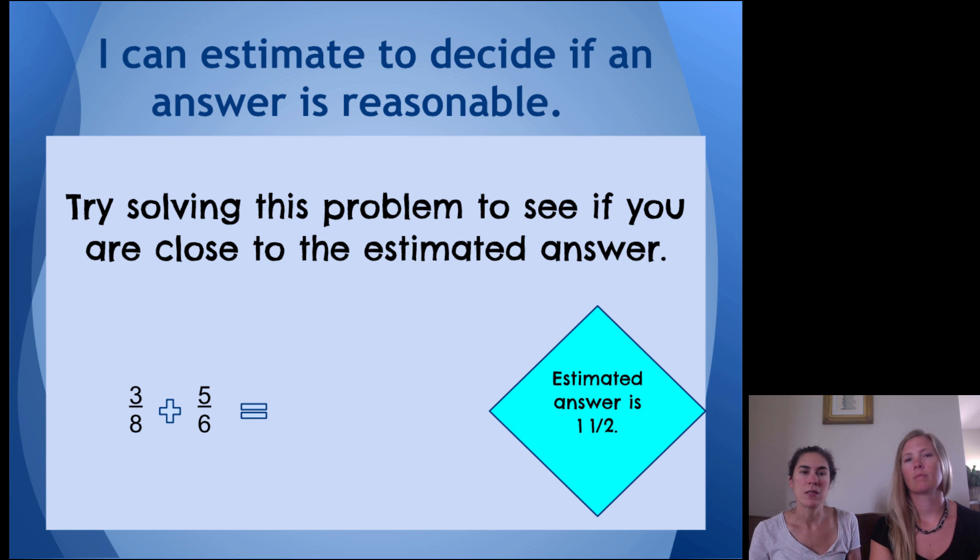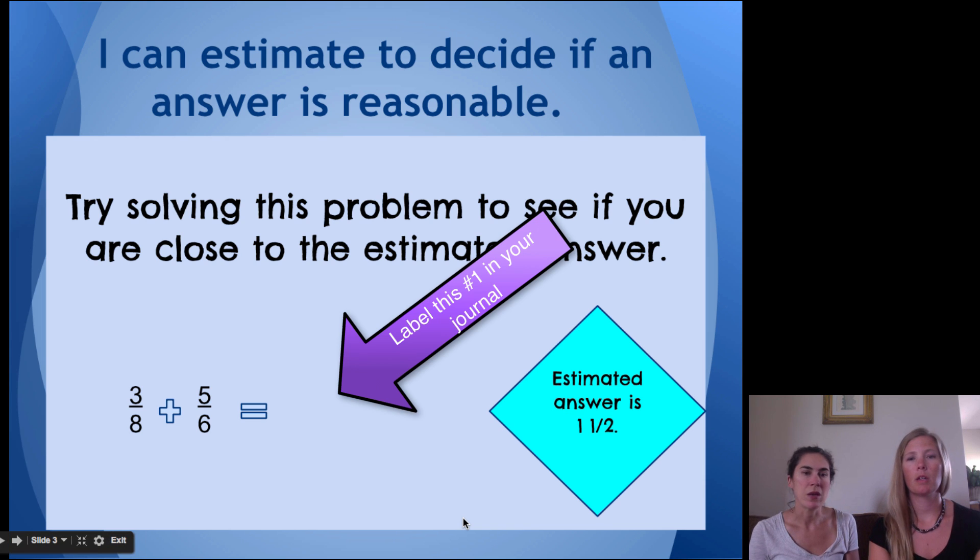You've had a lot of practice adding and subtracting fractions. So, this time, you're going to add three-eighths plus five-sixths. We gave you the estimated answer. You want to figure out the actual answer and see if it's close to this. Okay? So, that is going to be your first problem in your journal to work out and be ready to share.